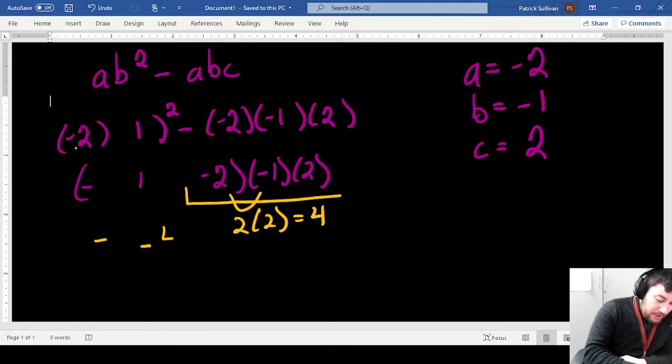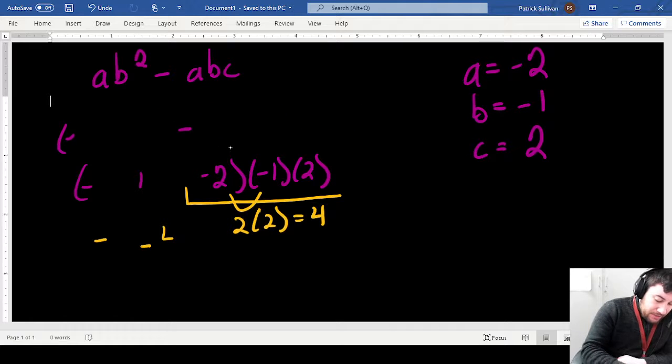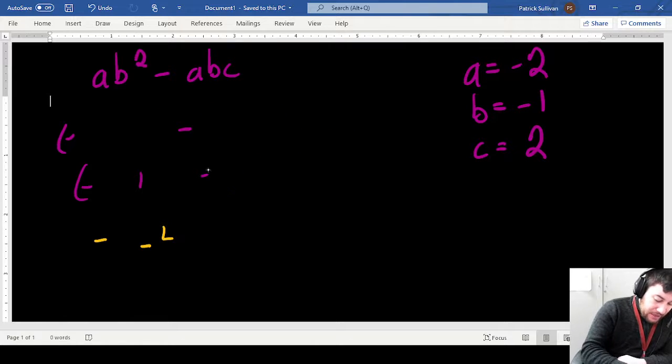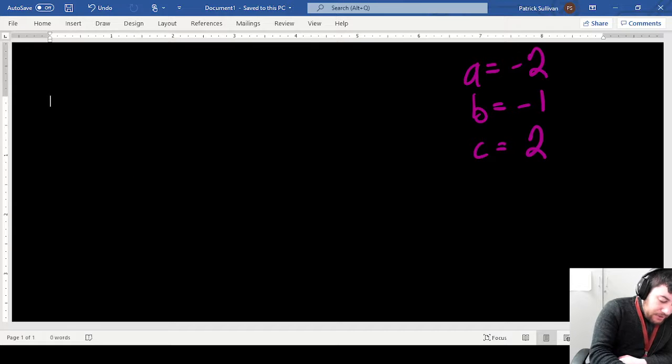Alright, we're going to do another one. This time we're going to bring in some addition and subtraction. We're going to use the same values for a, b, and c. I'm just going to rewrite it. So I'm going to take a squared minus a b, plus a c.